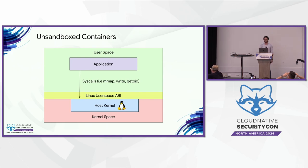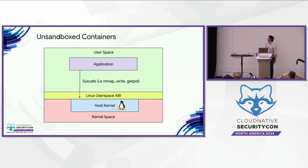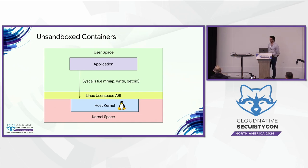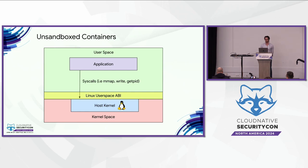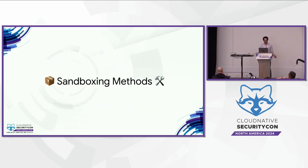Here's a diagram of what the unsandboxed security model looks like. Your application runs maybe in a pivot root, some cgroup limits, a limited capability set, its own user and mount namespaces — but other than that you have full access to the kernel user-space ABI: all the syscalls like mmap, write, getpid, proc files, all that you'd expect in a Linux environment. Hopefully at this point you can agree there are many cases where sandboxing can be a critical part of the security story.